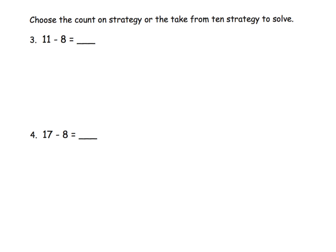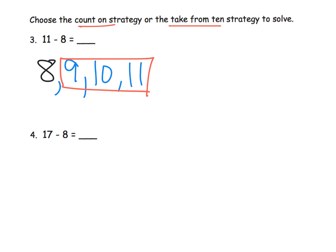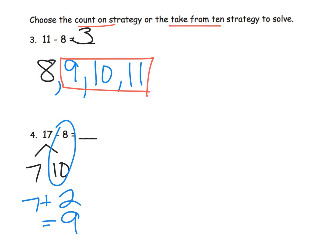Here we get to choose the take from or the count on strategy. Because it says 11 minus 8, those numbers are kind of close to each other, so I'm going to use the count on strategy. I start with 8, put my fist in the air, and count: 9, 10, 11. Because I have three fingers in the air, the answer is 3. Whereas for 17 minus 8, I'll use the take from 10 strategy and decompose 17 to be 7 and 10. 10 minus 8 is 2, plus the original 7 gives us 9. So 17 minus 8 is 9.